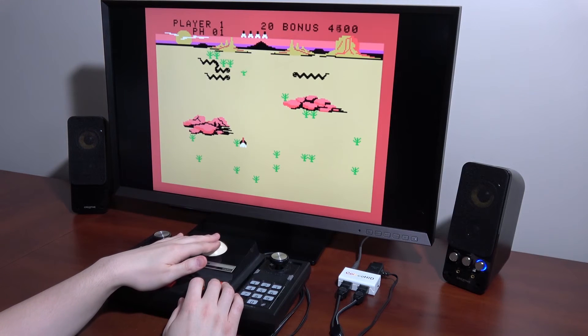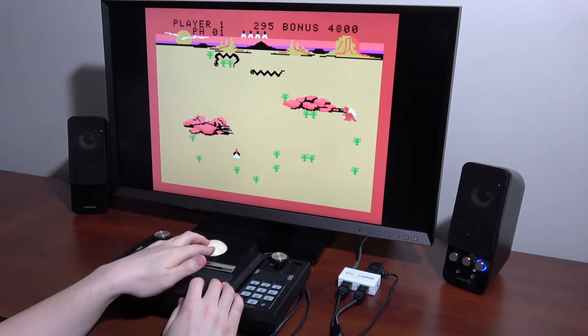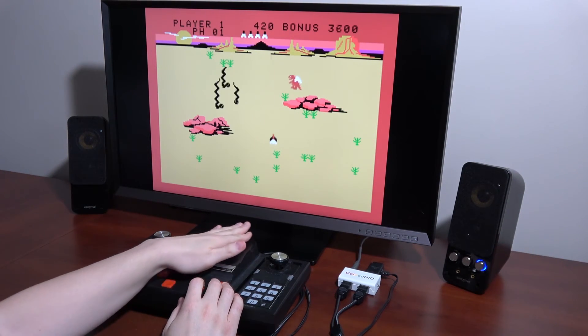Here's Slither, which was Coleco's Centipede clone that they advertised to sell more roller controller bundles.